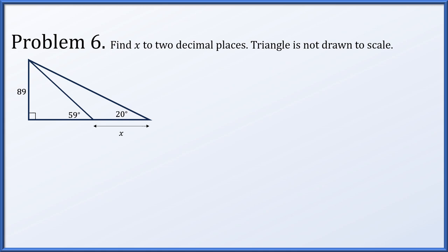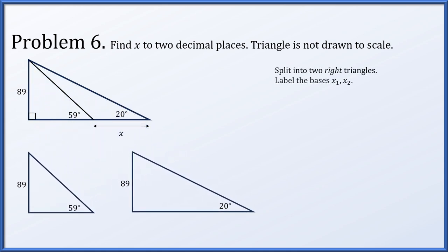Very similar to the previous problem, we will find x to two decimal places, and we will split it up into two right triangles. We will label the bases of these two right triangles x1 and x2. Slightly different to the previous, observe that the x we are trying to solve for is x2 minus x1. But still, all we have to do is solve for x2 and x1 and take a difference. In the left triangle, the tangent of 59 degrees, opposite over adjacent, 89 over x1. Solving for x1, that's 89 over the tangent of 59 degrees.